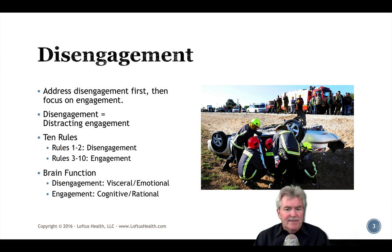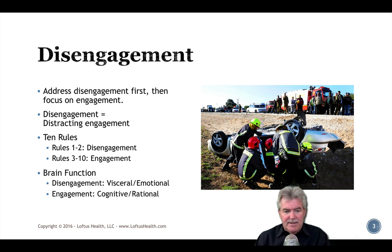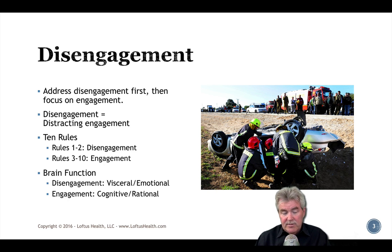What's driving this? It's basic brain function. Disengagement is very visceral — it's very emotional. Once it happens to us, we don't want to let it go. Whereas engagement is a lot more cognitive, much more rational, and that's where we want to get people. But once we've engaged that visceral, emotional part through distracting engagement, it's tough to get them over to that cognitive, rational piece. So start with focusing on things you can do that prevent, avoid, or mitigate disengagement. When we go through this course, you'll see what I mean when I give specific examples.